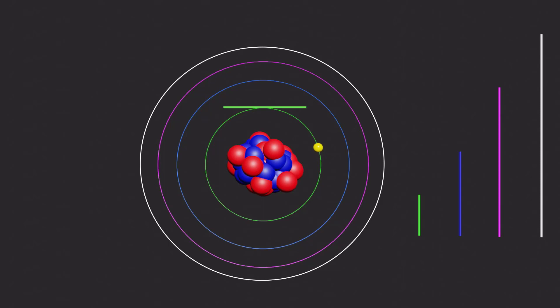The energy level closest to the nucleus is called the ground state, while the orbits farther away are called excited states.